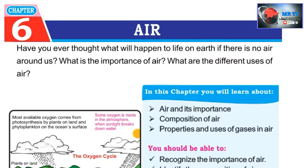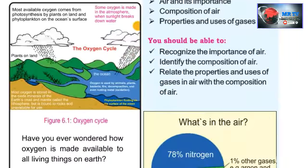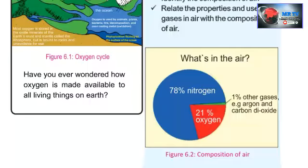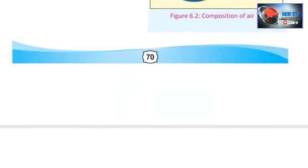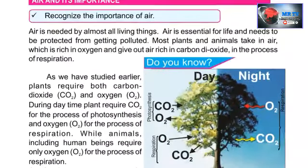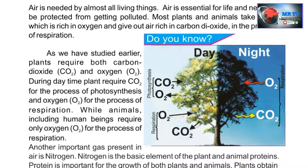Assalamu alaikum dear viewers. Today our topic is air, chapter number six. What is in the air? Nitrogen, oxygen, and other gases. It is important to know that during daylight, plants use photosynthesis — they take in carbon dioxide and give oxygen.